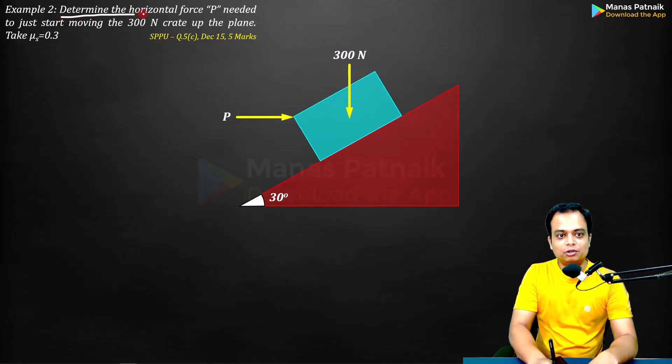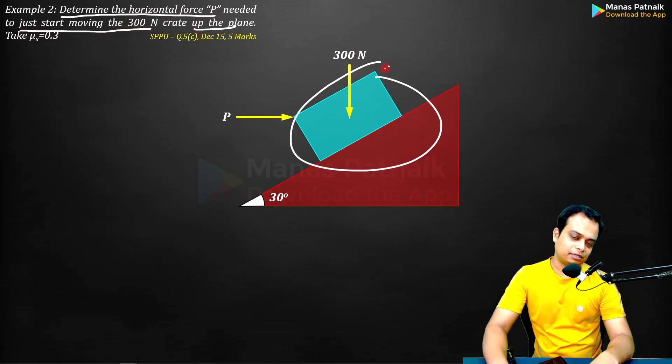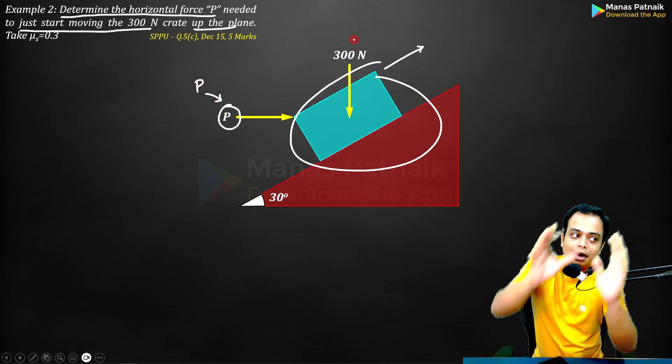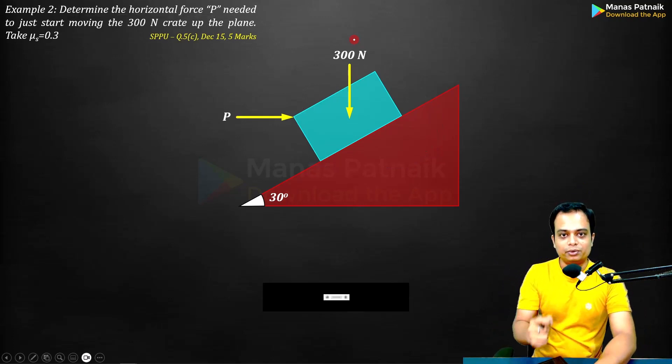Determine the horizontal force P needed to just start moving the 300 Newton crate up the plane. That means in this direction, how much force should be applied, or how much force P should be applied, so that it just starts moving up the plane? It is a case of limiting friction and we can do this very easily.